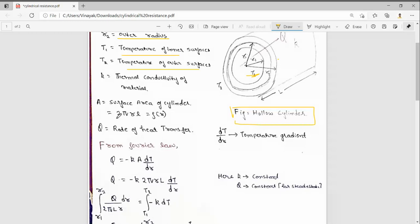So the surface area of the cylinder is 2πRL, where R is at some radial distance, and Q is the rate of heat transfer.